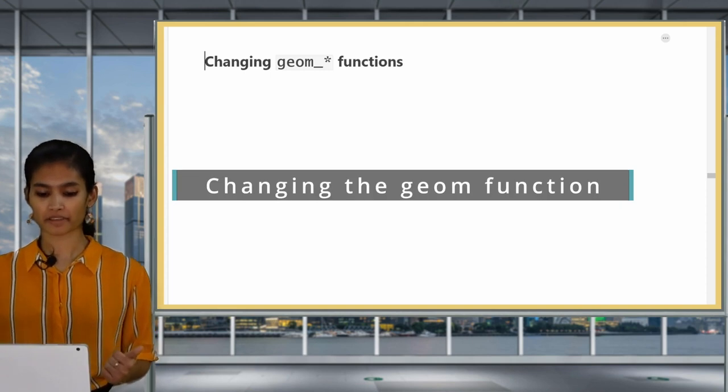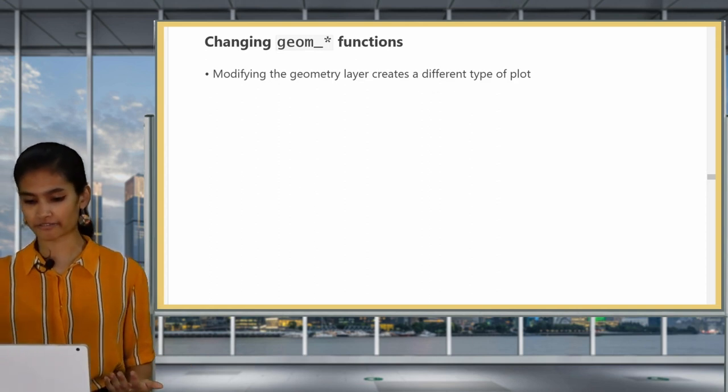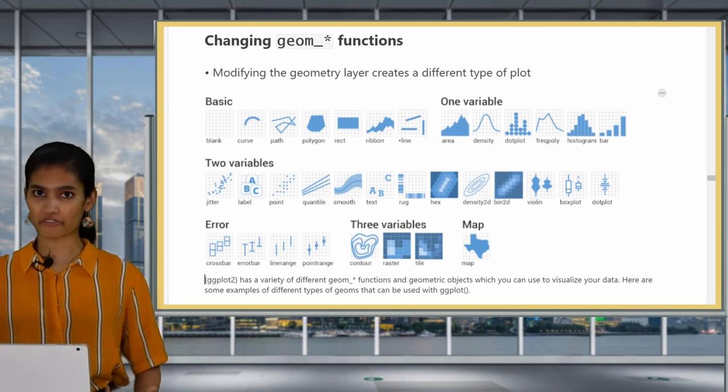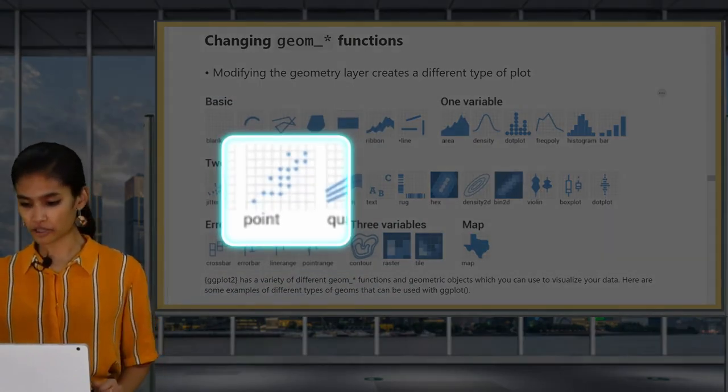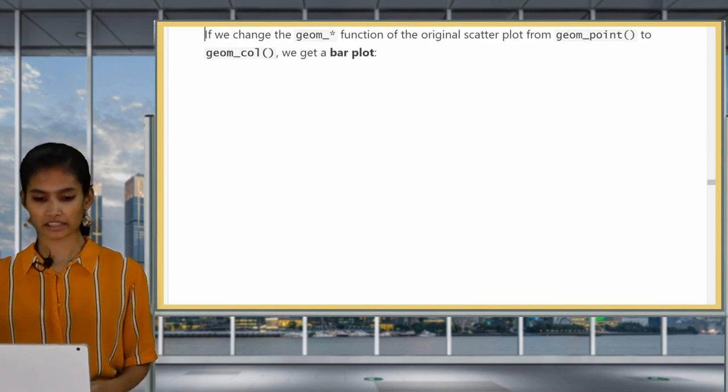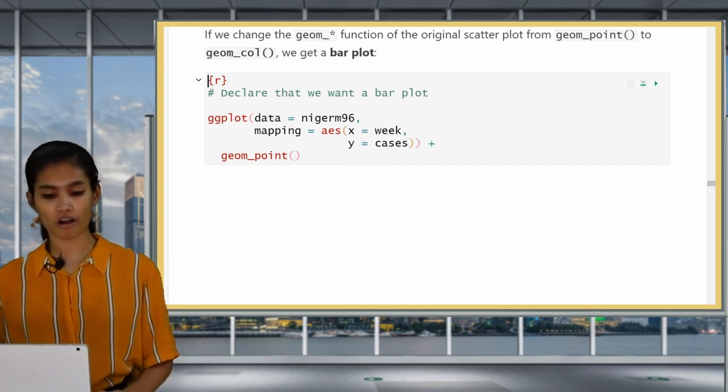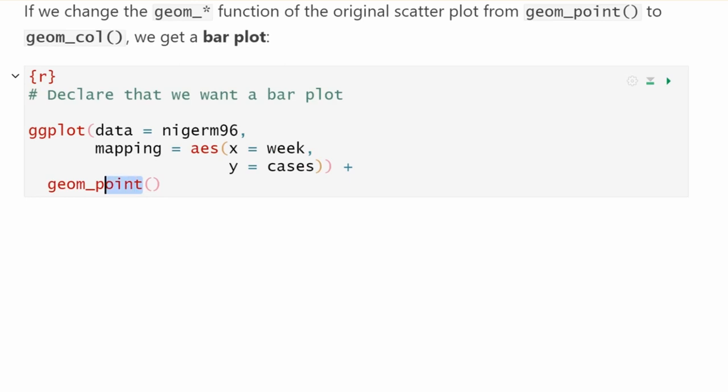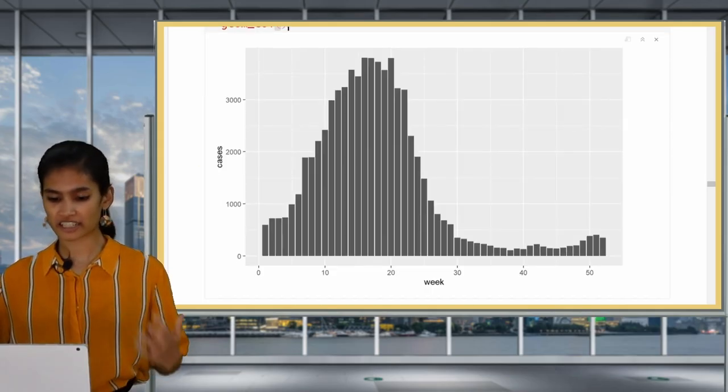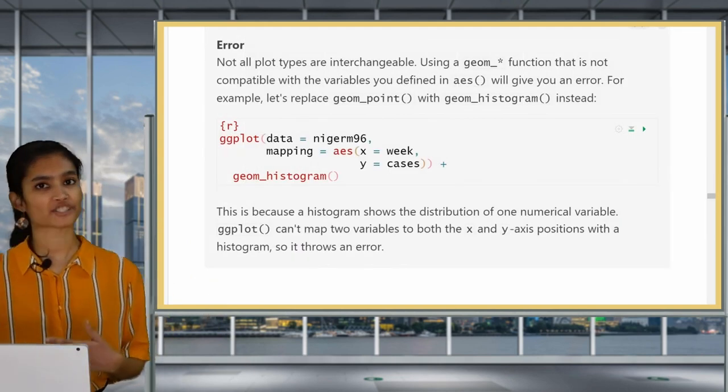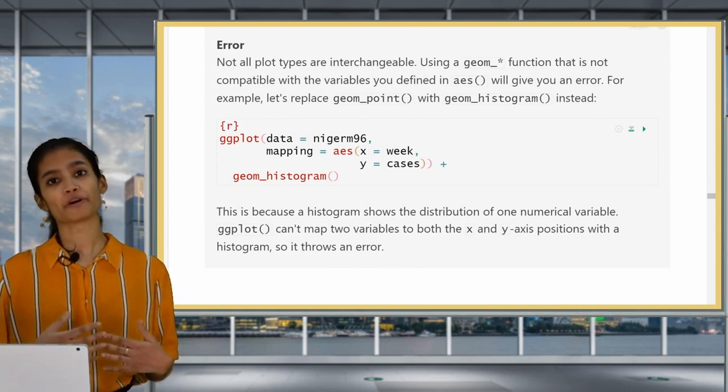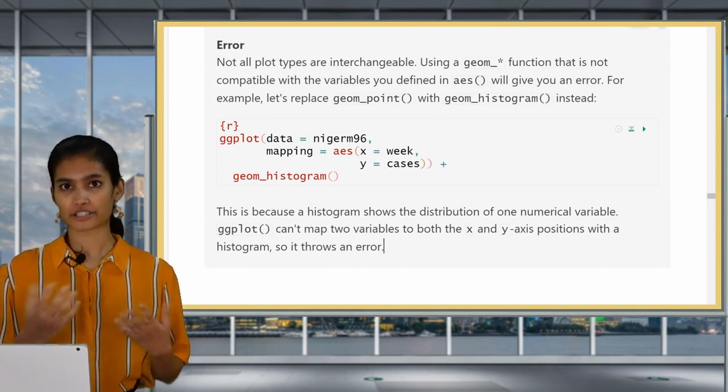Next, we're going to change the geom function. Modifying the geometry layer will give us a different kind of plot since we're using different kinds of shapes. Here are some common geom functions in ggplot and they correspond to different kinds of plots. What we've used so far is geom point to create a scatter plot. So now we'll make an incremental change again. We'll use the original code for our scatter plot here and we're going to change geom point to geom call which will give us a bar plot. Call here is short for column which is another name for bar charts.